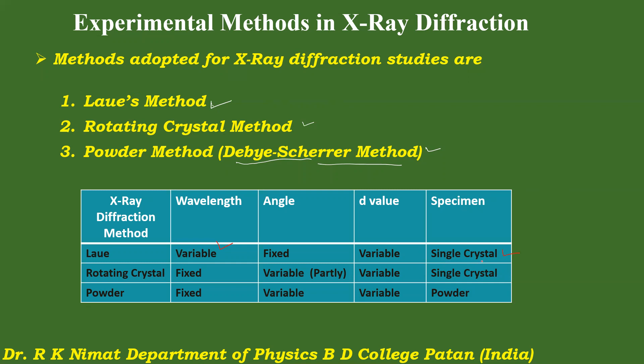The second method is the rotating crystal method. As the name indicates, a single crystal is held in the path of monochromatic X-rays and rotated about a particular axis at a very small speed. Since monochromatic X-rays are used, λ is fixed, and the angle θ is variable — partly variable. Different sets of parallel planes are thus exposed to the incident rays for different values of θ, and reflection occurs from those planes for which θ and d satisfy Bragg's condition. The specimen used is a single crystal.